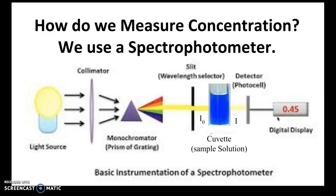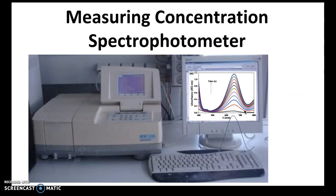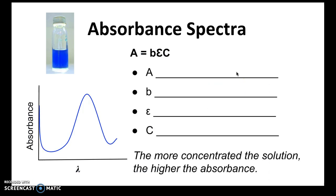Absorbance tells us, for a given wavelength of light — in this case yellow — how much light was absorbed by our sample. Using a spectrophotometer, you get a plot showing a peak where light is absorbed the most. In this sample, it's absorbed the most at 650 nanometers.